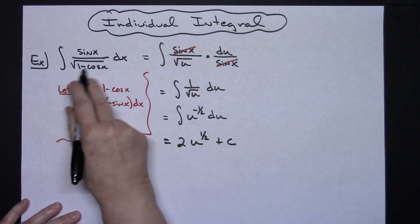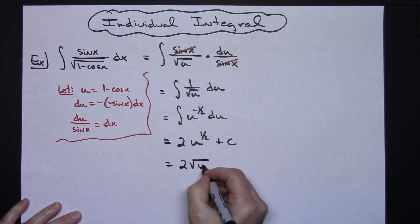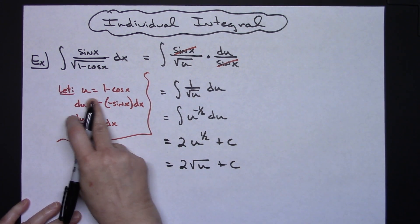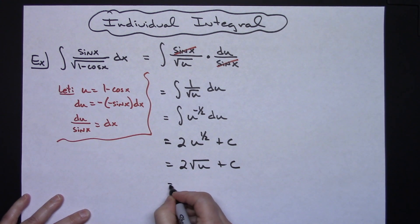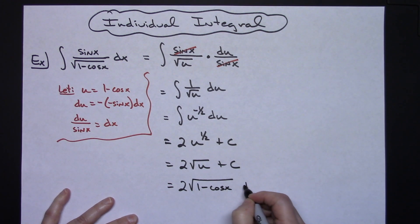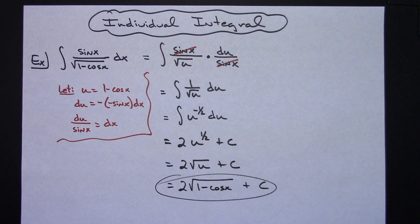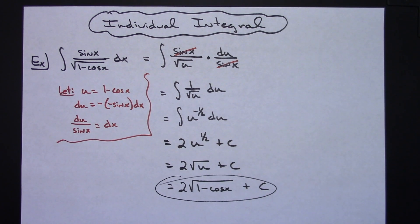Rewriting this in radical form since I had a radical up there is going to give me two square root of u plus c. Replacing u with what it is will give me a final answer of two square root of one minus cosine x plus c. So a pretty straightforward integral using that u substitution method. Definitely thanks for watching. If the videos are helping don't forget to subscribe to the channel and share with your friends.